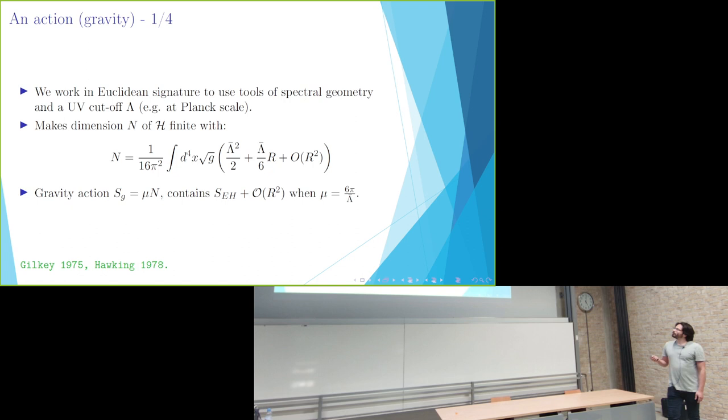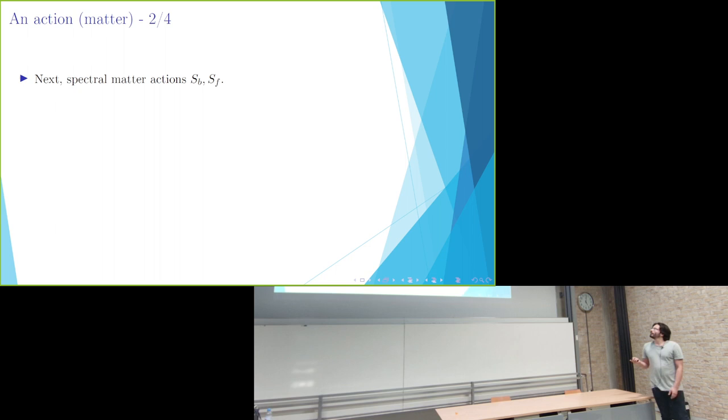And as you can maybe spot already, if you would just take this as the gravity action, if you make a right choice for a coefficient in front, then we actually have the Einstein Hilbert action, the first two terms with higher order corrections. So this is the gravity part that we take.